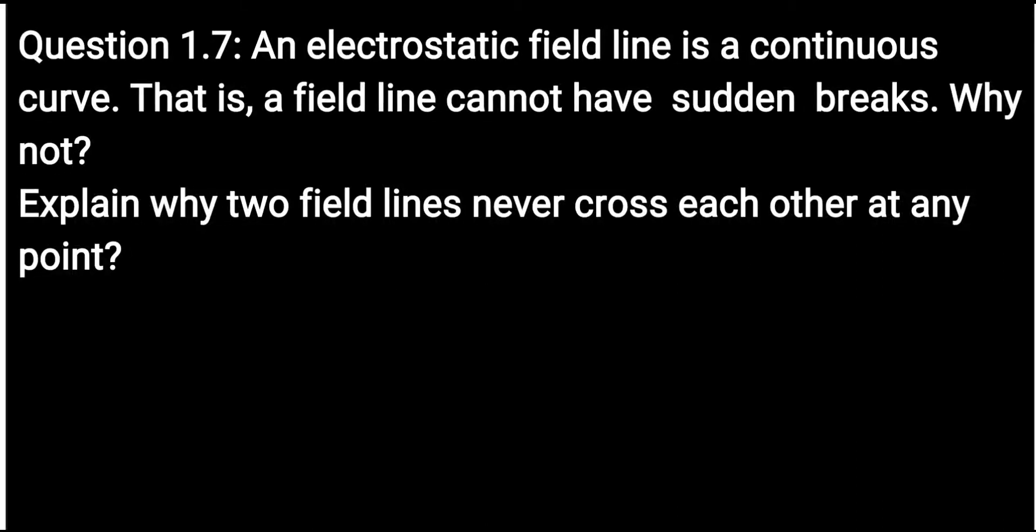Question 1.7: An electrostatic field line is a continuous curve. That is, a field line cannot have sudden breaks. Why not? Second part of this question: Explain why two field lines never cross each other at any point. Now, answer.